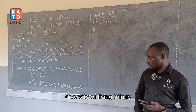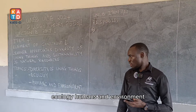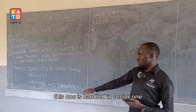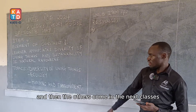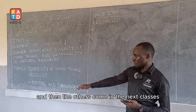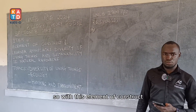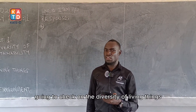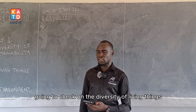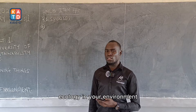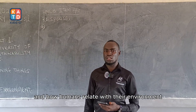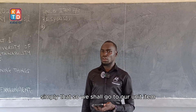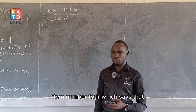Topic C includes diversity of living things, ecology, and humans and environment. This is handled in senior one and the other topics come in later classes. With this element of construct you are going to check on diversity of living things, ecology, and how humans relate with their environment. Now we shall go to UNEB item number 4.